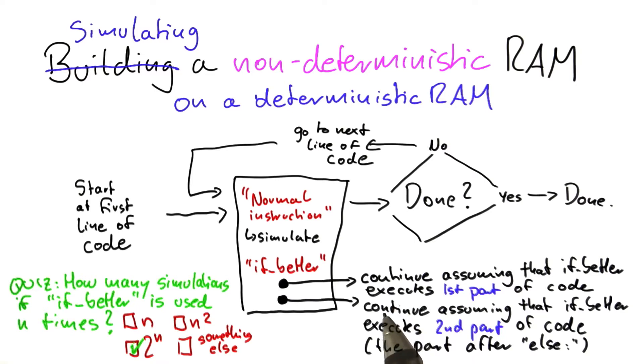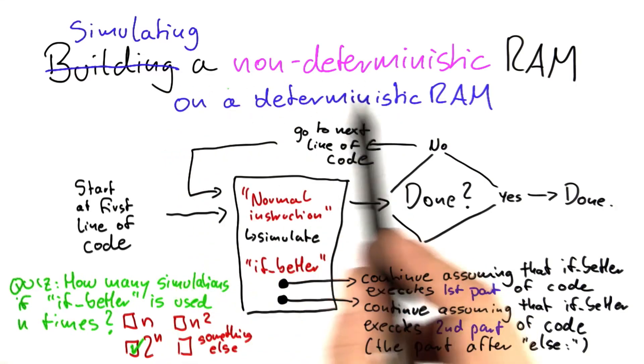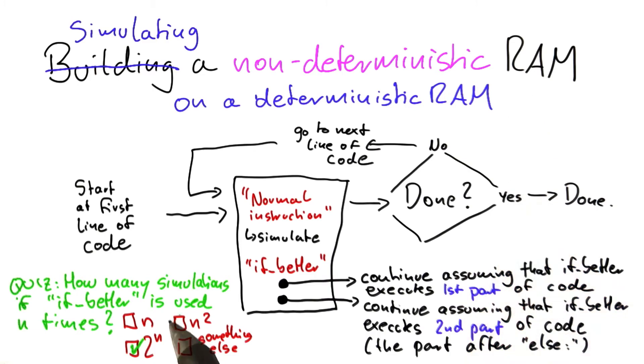Now, of course, the question would be, could you simulate a non-deterministic RAM more efficiently? For example, only using a polynomial number of simulations.